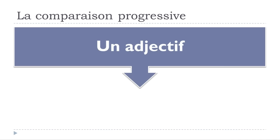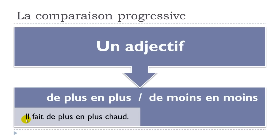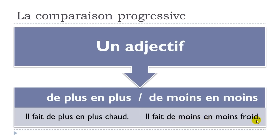To combine it with an adjective, you use 'de plus en plus' — making the liaison: de plus en plus — or 'de moins en moins.' For example: 'il fait de plus en plus chaud' and 'il fait de moins en moins froid.' Your adjective comes at the end, and you place 'de plus en plus' or 'de moins en moins' just before it.